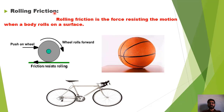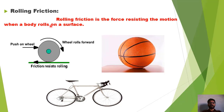ہمارا topic ہے rolling friction۔ Rolling friction کیا ہوتی ہے؟ Rolling friction is the force resisting the motion when a body rolls on a surface. جب بھی کوئی body کسی surface کی اوپر roll کرتی ہے تو اس کی rolling کے دوران اس پہ جو opposing force لگ رہی ہوتی ہے، جو اس کی motion کو resist کر رہی ہوتی ہے، اس resisting force کو نام دیتے ہیں rolling friction کا۔ یہاں پہ ایک wheel ہے جسے ہم forward direction میں pull کر رہے ہیں۔ Wheel forward direction میں جا رہا ہے لیکن اس پر opposite direction میں ایک force لگ رہی ہے جسے ہم friction کا نام دیتے ہیں۔ چونکہ یہ wheel اس surface کی اوپر roll کرتا ہوا آگے جا رہا ہے، اس friction کو نام دیتے ہیں rolling friction کا۔